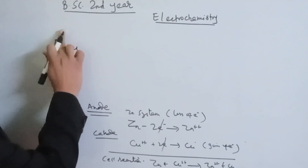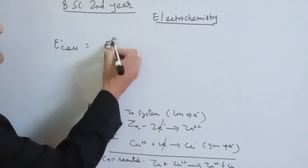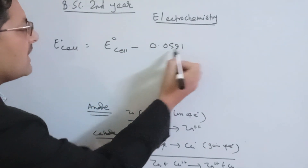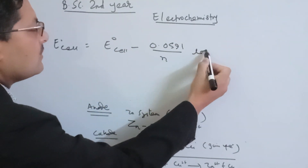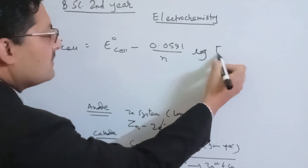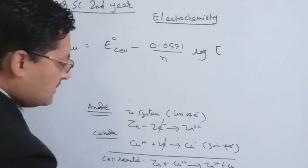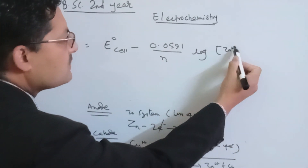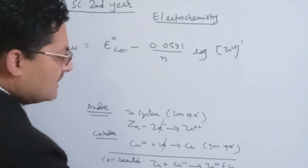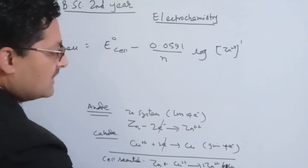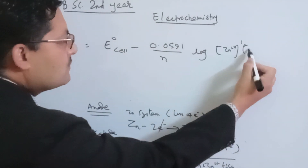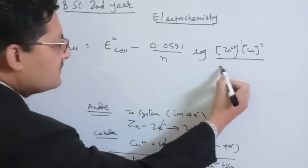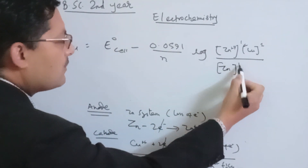Now applying the Nernst equation: E cell = E° cell − (0.0591 / n) × log([Zn²⁺] / [Cu²⁺]). The product is Zn²⁺ with concentration raised to power 1, divided by Cu²⁺ concentration raised to power 1. Since both stoichiometric coefficients are 1, and n equals 2 for this reaction.